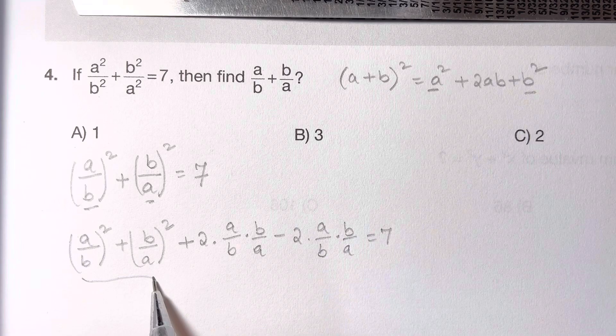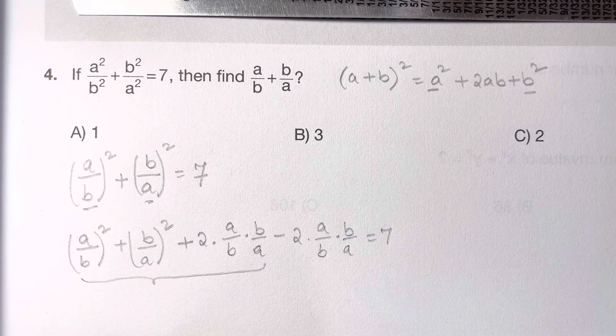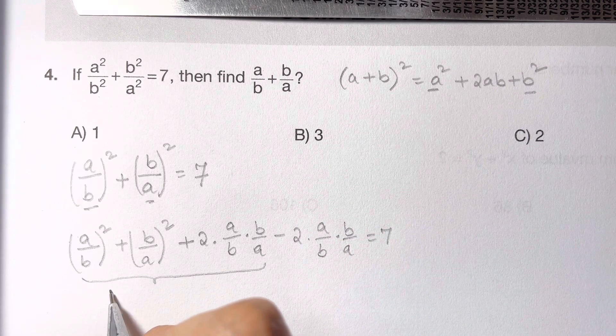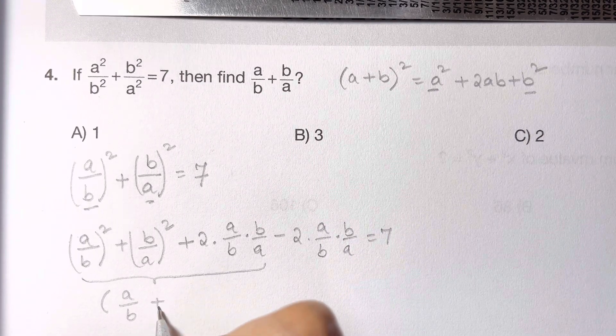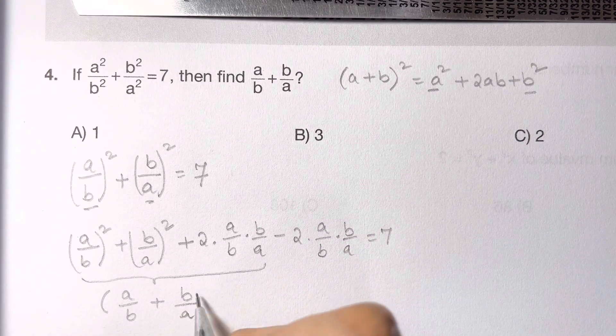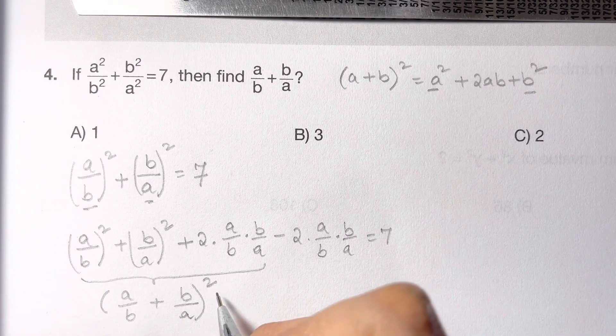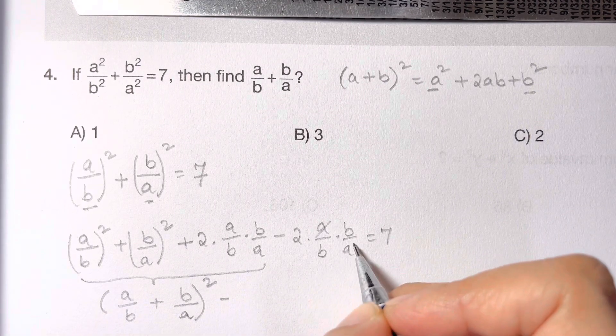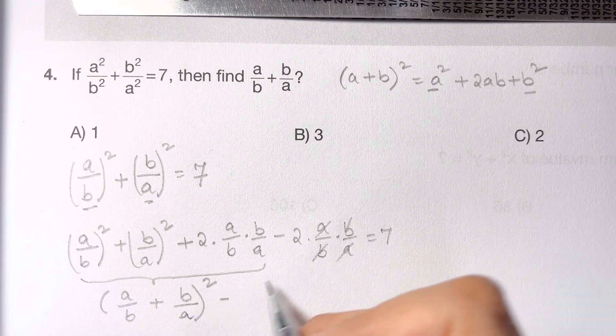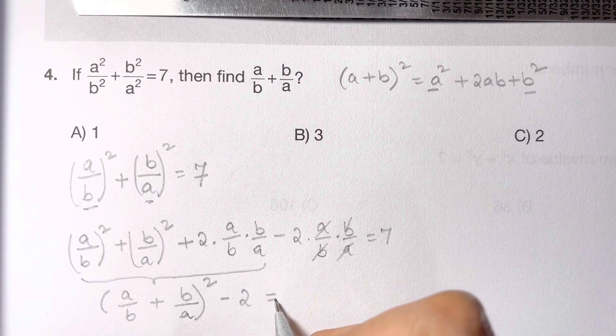Now this whole thing is my identity, it's the formula: (a over b plus b over a)². Here the a's cancel out, the b's cancel out, so I'm left with 2 equals 7.